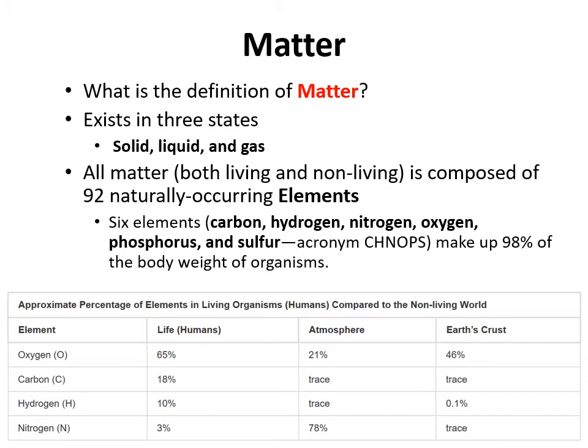When we talk about matter, it's usually composed of 92 naturally occurring elements. Elements are basically forms of matter that have a very specific chemical and physical property to them, and an element cannot be broken down into smaller substances that would maintain those specific properties. The six most important ones for us are what we can call CHNOPS: carbon, hydrogen, nitrogen, oxygen, phosphorus, and sulfur. You can remember it as 'schnapps' or however you want to arrange those letters.